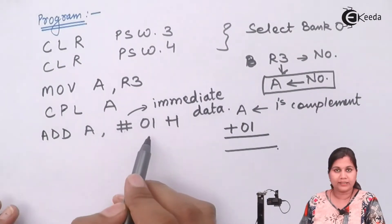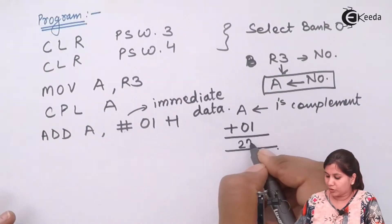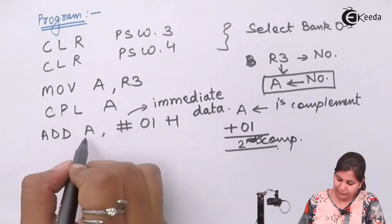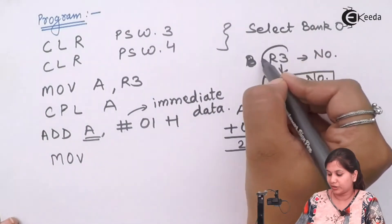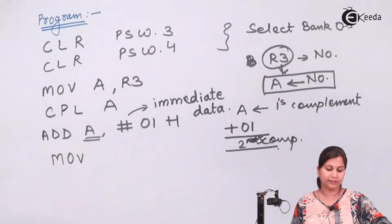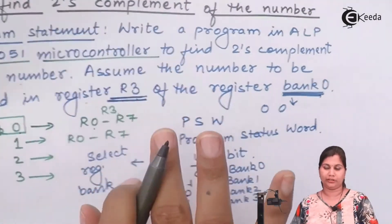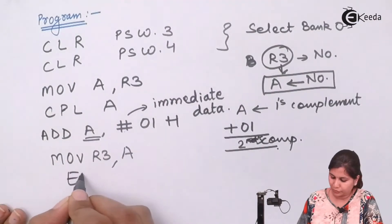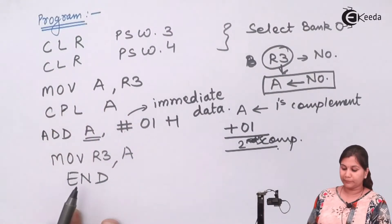After CPL A, the accumulator holds the one's complement. Next, to get the two's complement we add immediate data 01H to the accumulator using ADD A, #01H — here we are using immediate addressing. Now the accumulator holds the two's complement. We then store the result back into register R3 using MOV R3, A, and finally end the program with the END instruction.